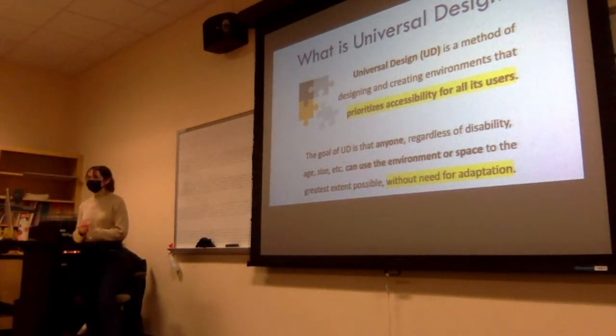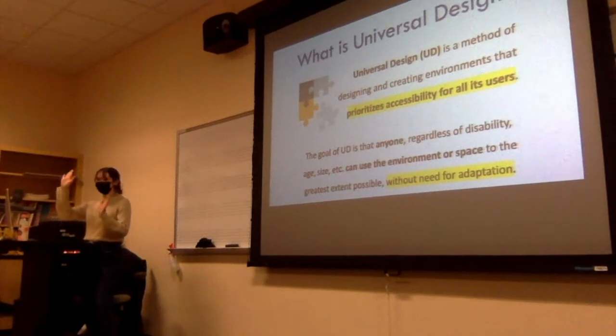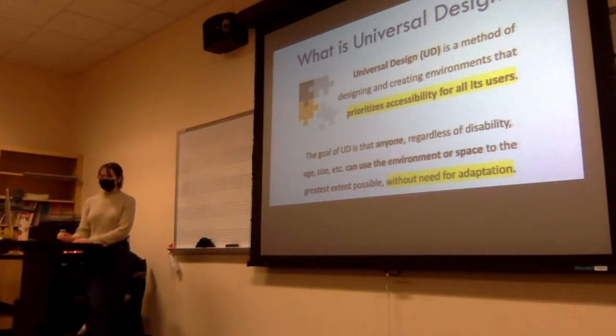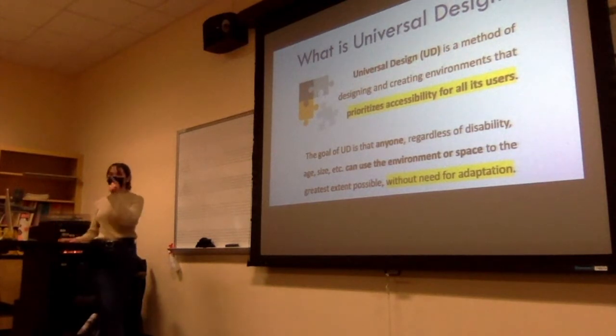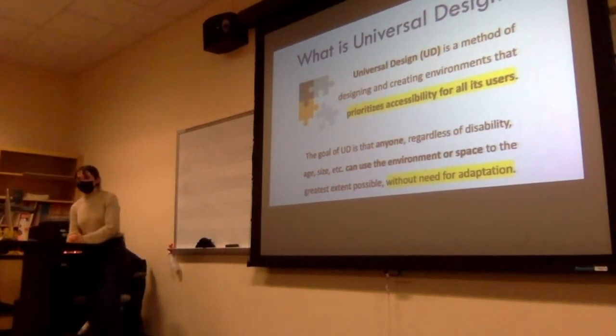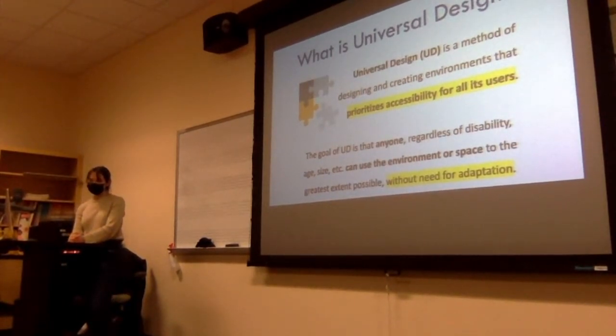We come across accessibility features every day. How many of us use the push buttons that open the doors to the new facility all the time? Even if you don't use a wheelchair, that feature helps you. But that is an example of an accommodation, not universal design. If it was universal design, those doors would be automatic. In the corner there, you have a wheelchair accessible table. If this room was universally designed, all of those tables would be that kind of table. Universal design is not creating something and then adding band-aids to it later to make it accessible. From the beginning, accessibility is a priority and it's designed so that anyone can engage with the space.